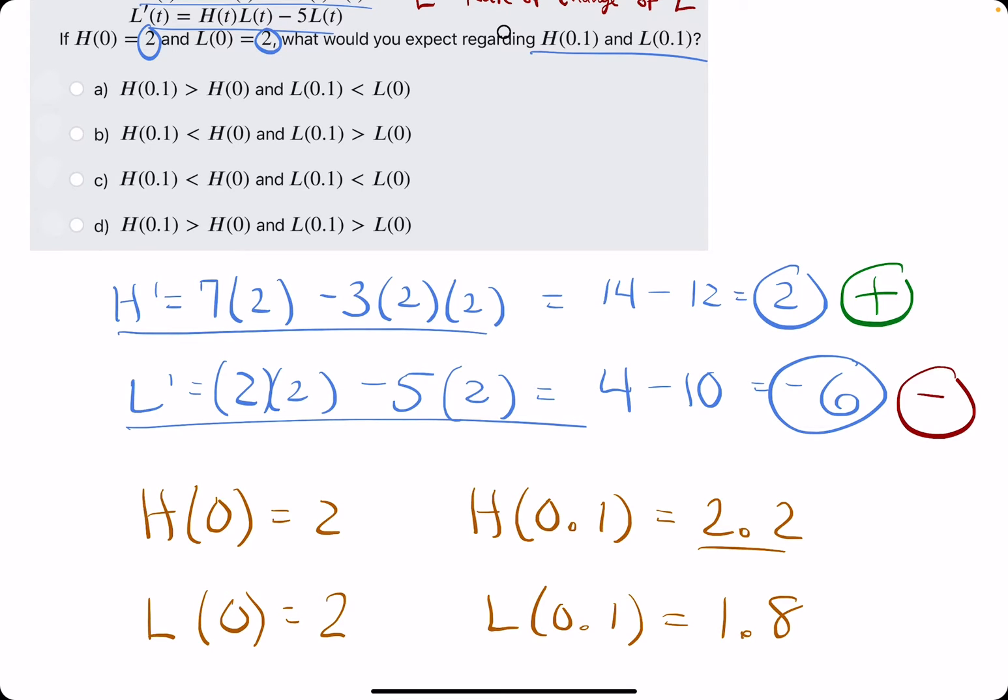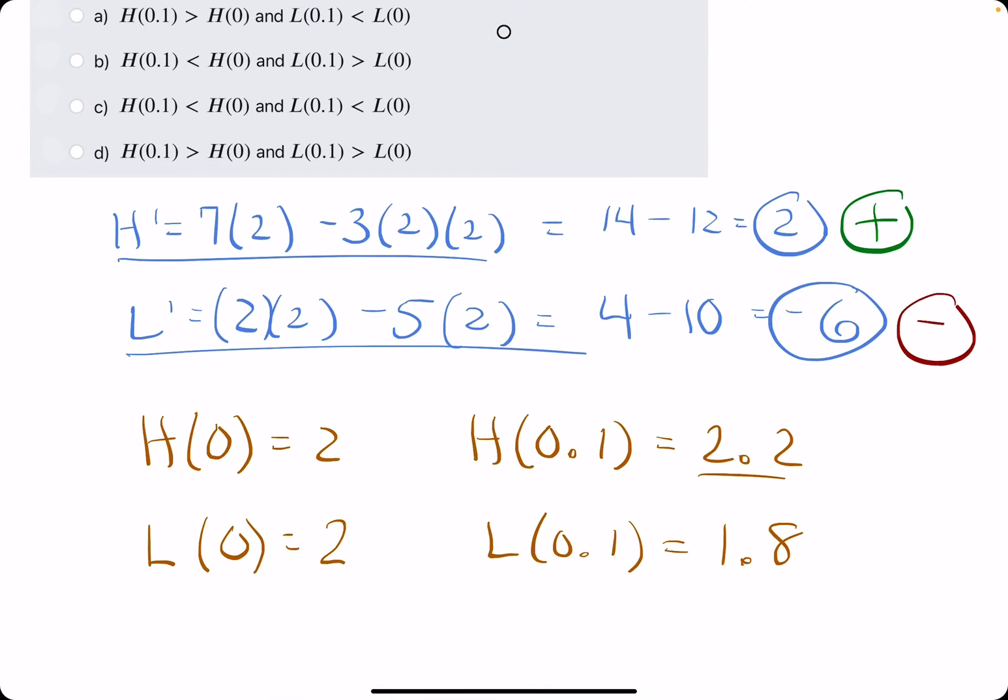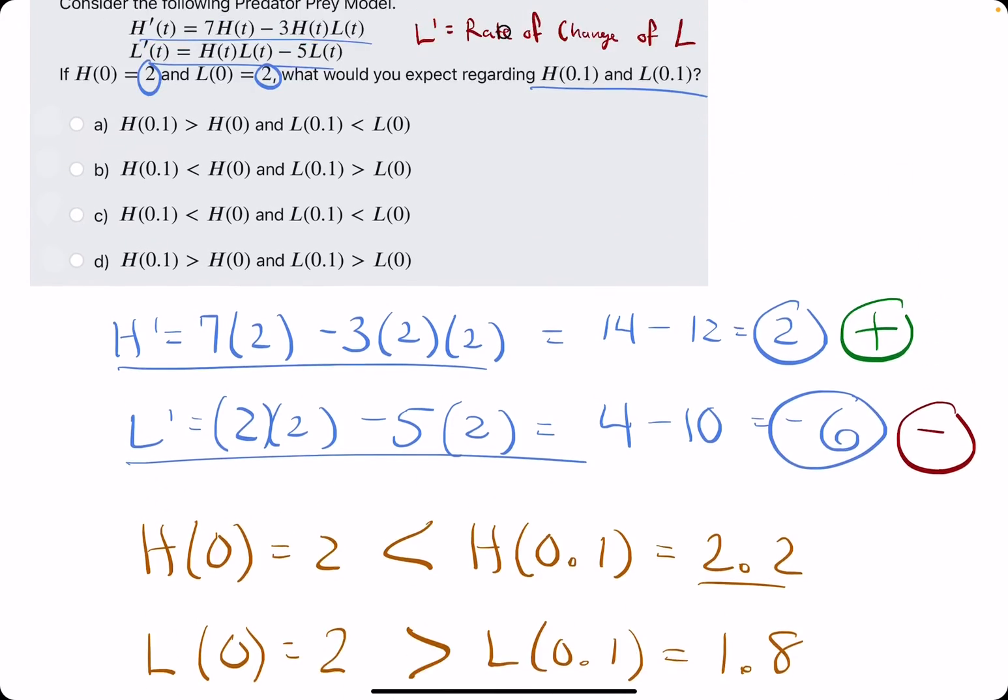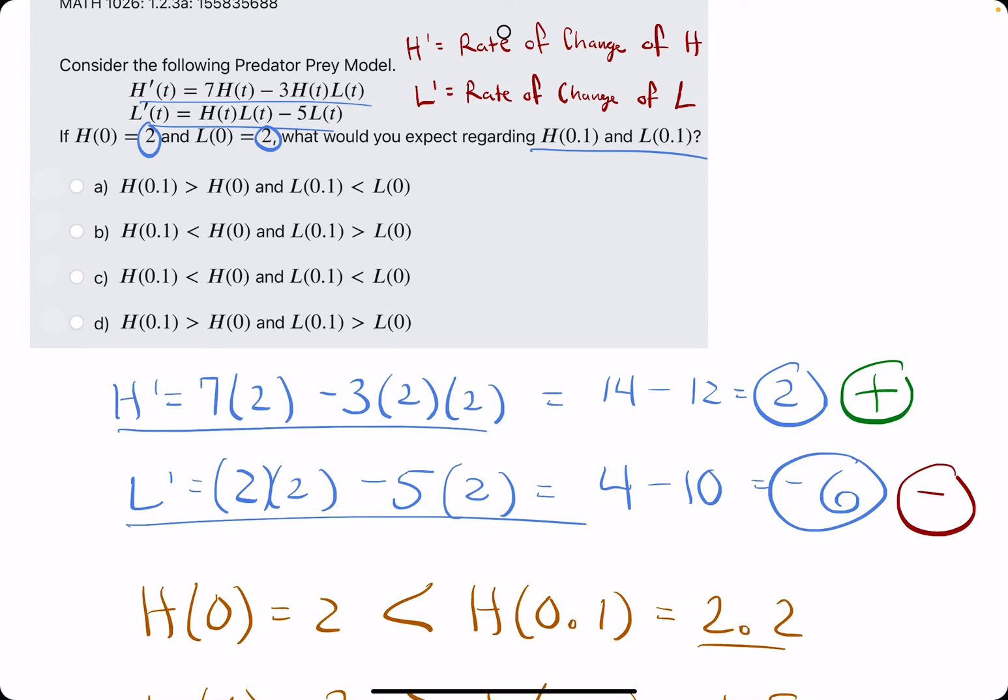Basically we're just trying to relate H(0) and H(0.1), but it looks like they have it in kind of a flipped order here compared to how I have it. So we'll just say that H(0.1) is greater than H(0) and L(0.1) is less than L(0). We're looking for the one that corresponds most accurately to this.